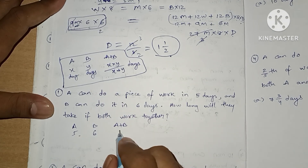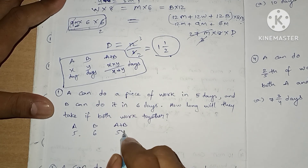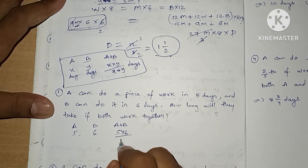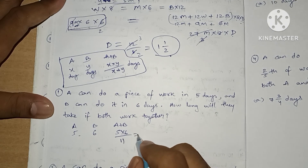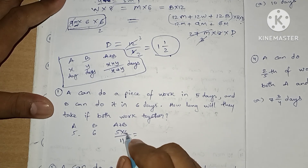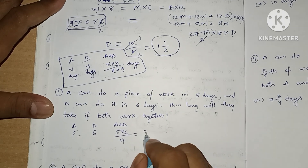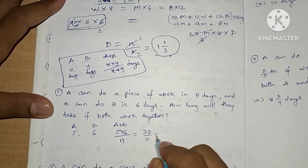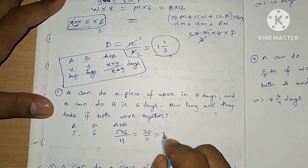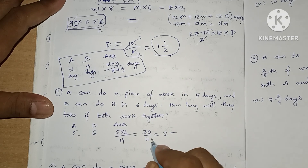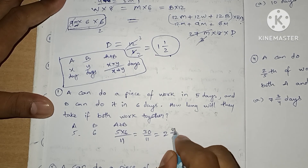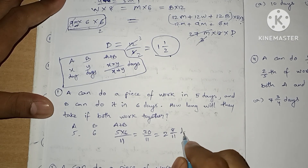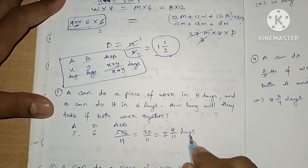B can do it in 6 days. How long will they take if both work together? A and B together can complete the whole work in X × Y / (X + Y) = 5 × 6 / (5 + 6) = 30/11 = 2 and 8/11 days. That is our answer.